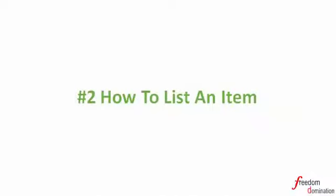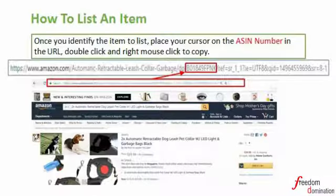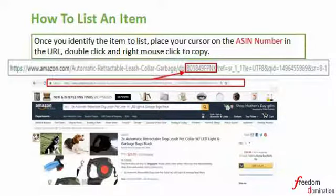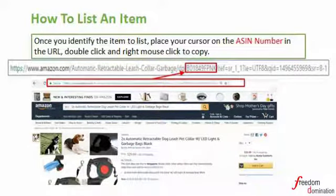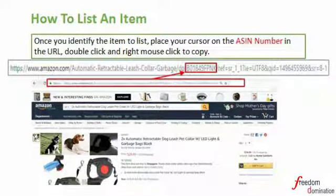Number two: how to list an item. Once you identify the item to list, first things first, copy the ASIN number of the item you are going to list. ASIN stands for Amazon Standard Identification Number and it's used for product identification within Amazon. There are two places to find this ASIN number: either from the URL or the product information at the product page.